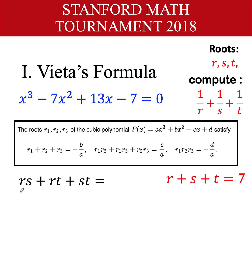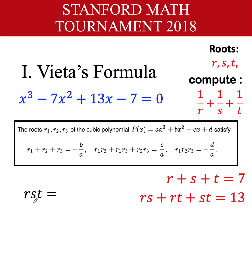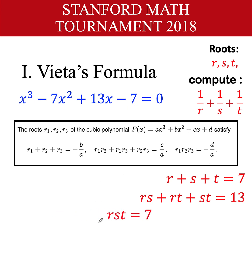Furthermore, the sum of pairwise products rs plus rt plus st equals c over a. Our c is 13 and a is 1, so rs plus rt plus st equals 13. Finally, the product r times s times t equals negative d over a, which is the negative of negative 7 over 1, equal to 7.